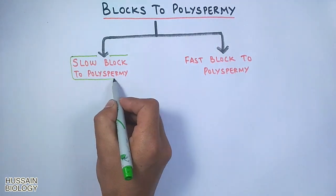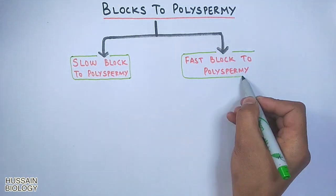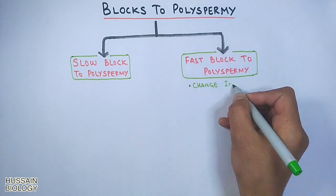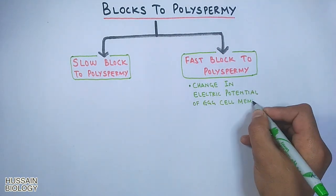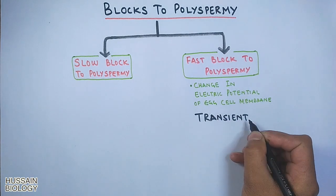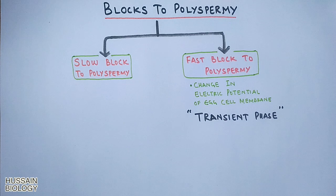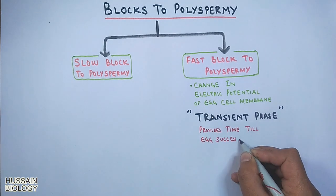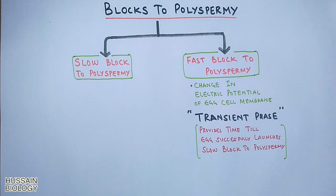The fast block to polyspermia is an electrical block to the sperms. Here the change in electric potential of the egg cell membrane leads to the blocking of multiple sperms. It should be noted this phase is transient, because it does not last long — it only provides time until the egg successfully launches its slow block to polyspermia.